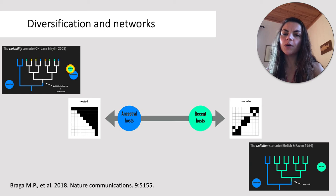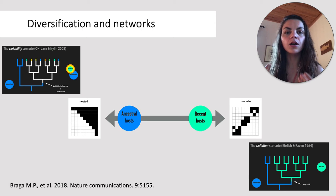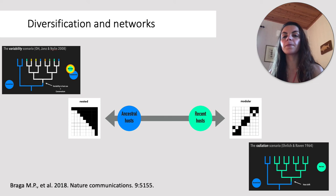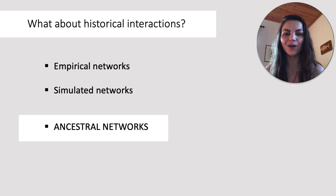One question then is how these networks were formed — which evolutionary processes generated the properties we see today. In a paper in 2018, we simulated networks according to two scenarios of host-associated diversification: a variability scenario from the oscillation hypothesis, and a radiation scenario from Ehrlich and Raven. We showed that host shifts increased network modularity, while host range expansions and recolonizations of ancestral hosts produced network nestedness. By comparing empirical and simulated networks, we found that both the oscillation hypothesis and the escape-and-radiate scenario seem to have contributed to butterfly diversification.